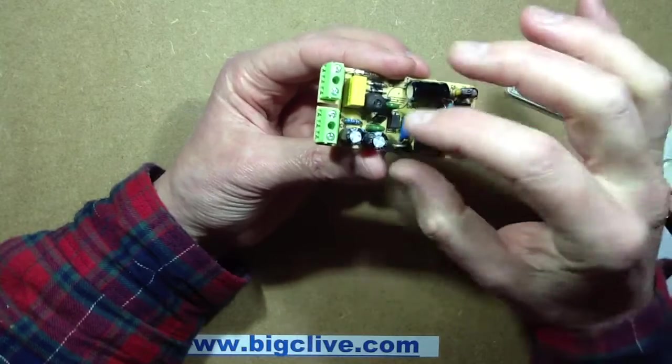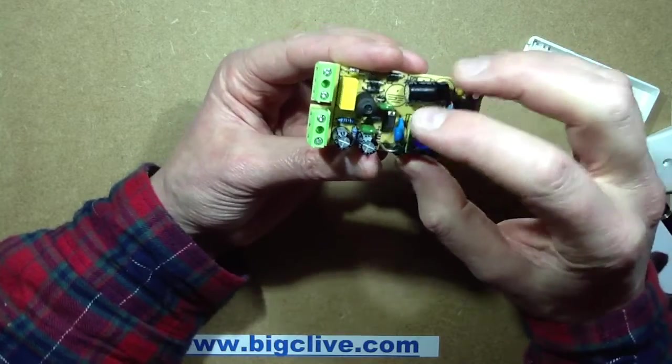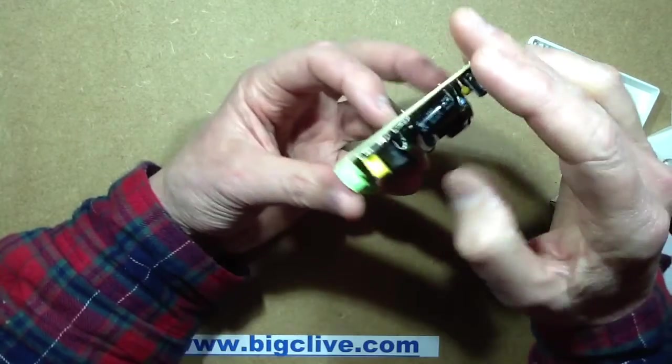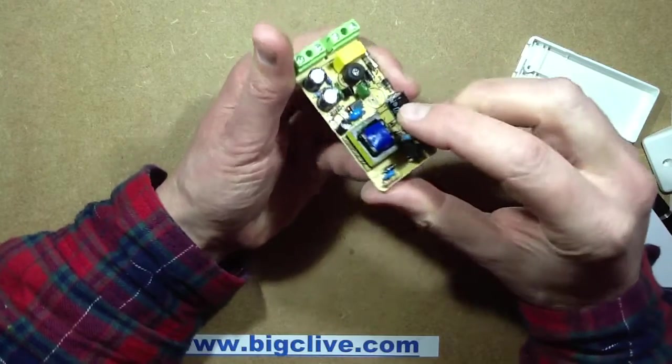The current suppression capacitor that bridges from the mains side to the low voltage side, the ones that I just don't trust at all. The capacitor is 10 microfarads at 400 volts.